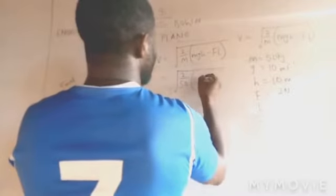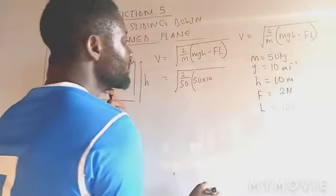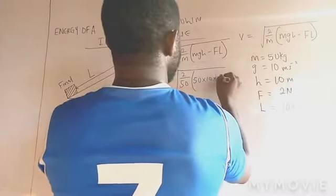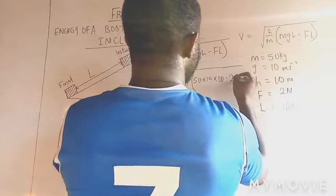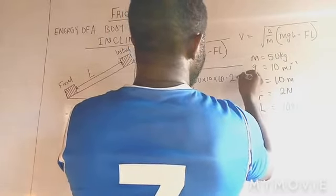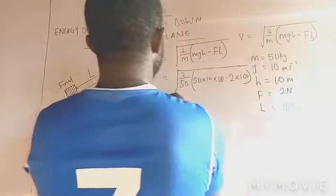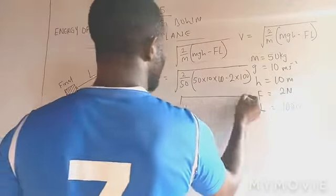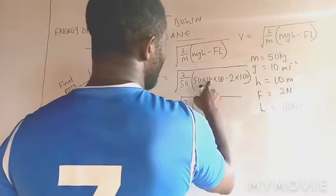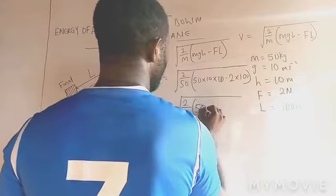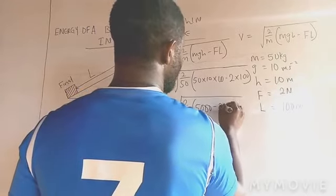Minus frictional force which is 2 N times 100. This will give me square root 2 over 50, 5,000 minus 200.